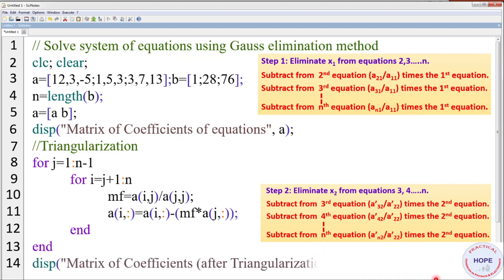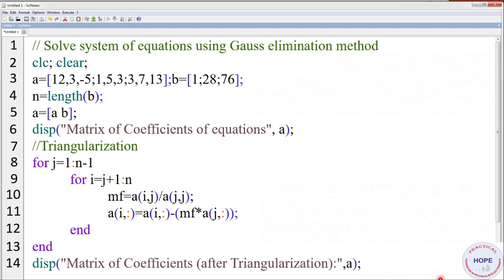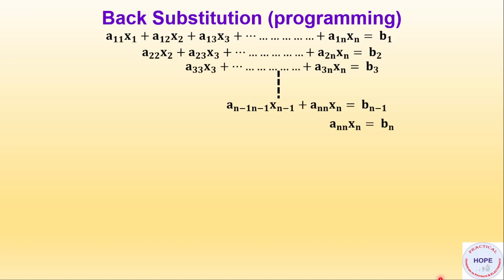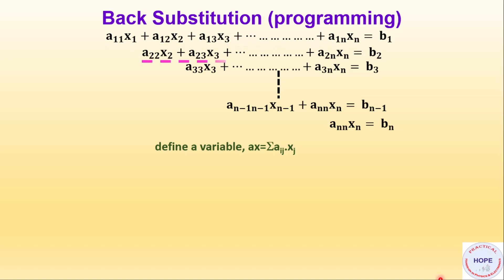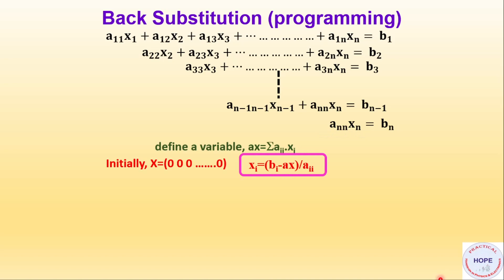Now we display the new coefficient matrix A after triangularization. Next we have to do the back substitution. Before writing the program, let's see how we are going to do it. We define a variable AX, which is the sum of A(i,j) multiplied by X(j). For the first equation, AX is the sum A11*X1 + A12*X2 + ... + A1n*Xn. For the second, third, and finally the last equation, AX will be Ann*Xn. Initially we assume all X values X1 to Xn are 0. We define the expression X(i) equal to B(i) minus AX divided by A(i,i). This is how we calculate x1, x2 till xn using this formula.